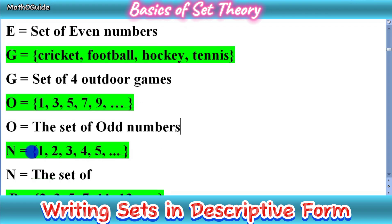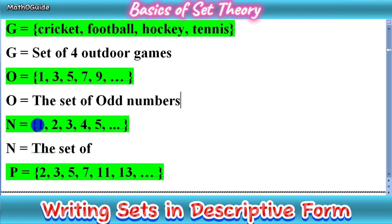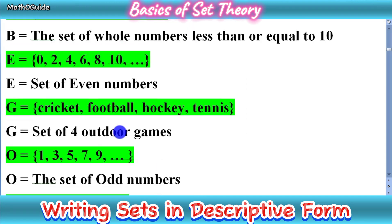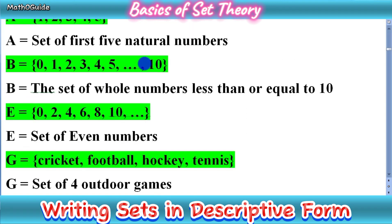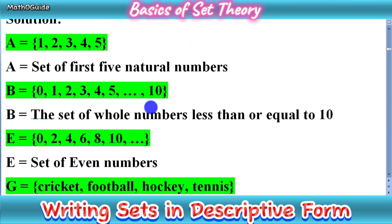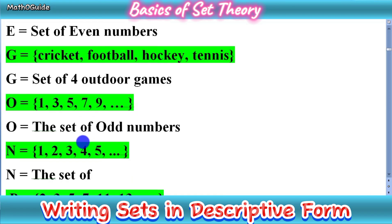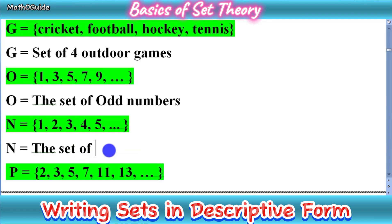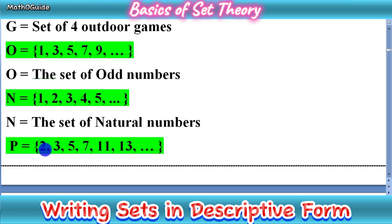Now set N = {1, 2, 3, 4, 5, ...}. These are counting numbers or natural numbers, and we have no limit here. In the first set we had a limit up to 5, and in set B up to 10, but here there is no limit. It means we have the complete set of natural numbers, so we simply write: set of natural numbers.